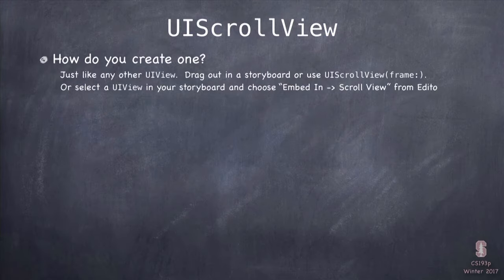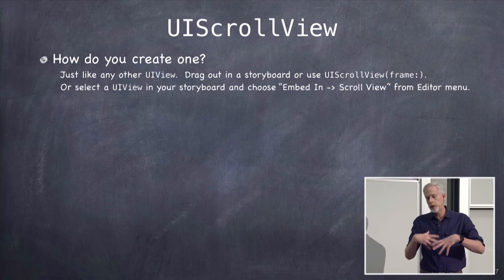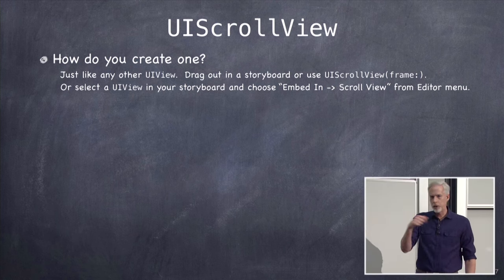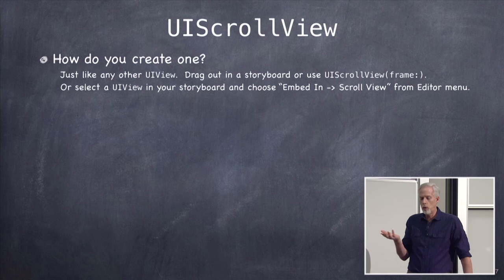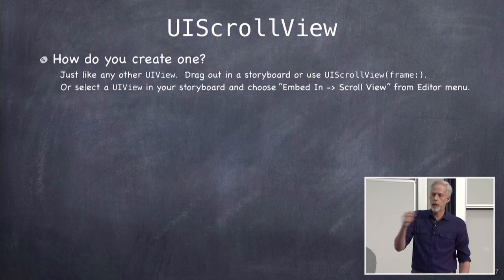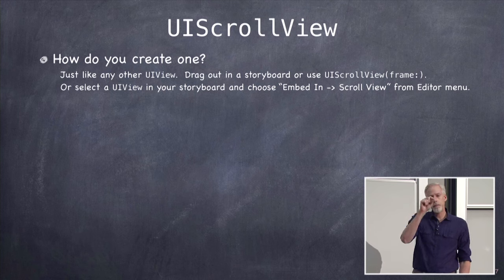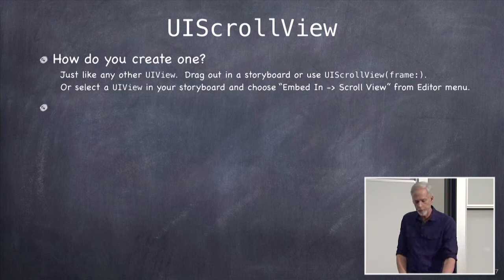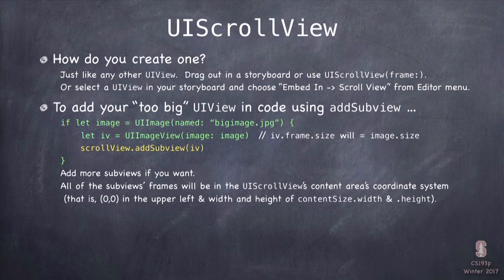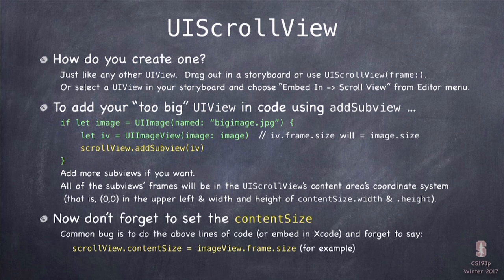How do you create a scroll view? Very straightforwardly — you drag it out of the utilities area in storyboard. You can also do 'UIScrollView(frame:)' in code. 99% of the time we pull it out from storyboard. You can also select a view already in your storyboard, go to Embed, and say 'Embed in Scroll View'. Then you add whatever too-big view you want to scroll around in as a subview of the scroll view. But of course, don't forget to set the content size.